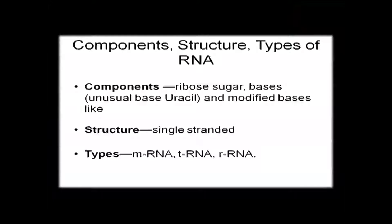The components of RNA include ribose sugar as well as nitrogenous bases. In case of RNA, instead of thymine, we find uracil. And interestingly, in tRNA and rRNA you can find various modified bases such as methyl cytosine, pseudouracil, etc.